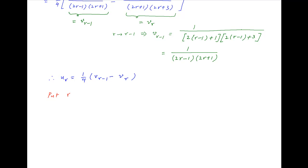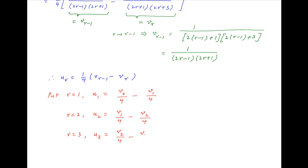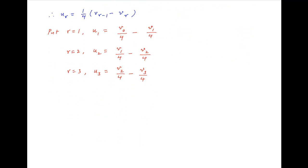Now put r equal to 1: we get the first term u1 equal to v0/4 minus v1/4. Put r equal to 2: we get u2 equal to v1/4 minus v2/4. Put r equal to 3: we get u3 equal to v2/4 minus v3/4, and so on. Put r equal to n: the nth term un equals v(n−1)/4 minus vn/4.